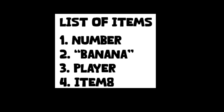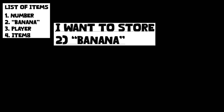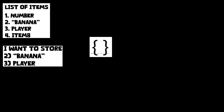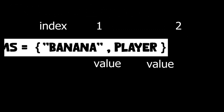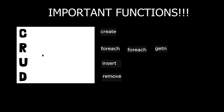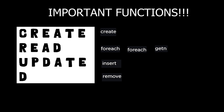If you have a bunch of items and you want to keep track of those items, you would use a table. A table can store anything, which includes items, numbers, and players. Tables have functions, and we can use these functions to change data in our table. We will be going over CRUD functions, which means to create, read, update, and delete values in our table.